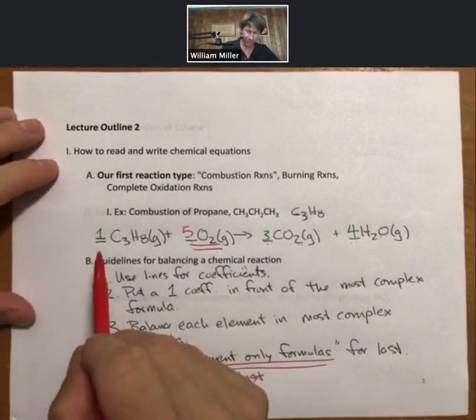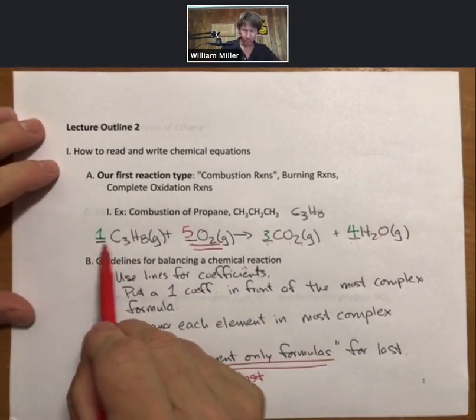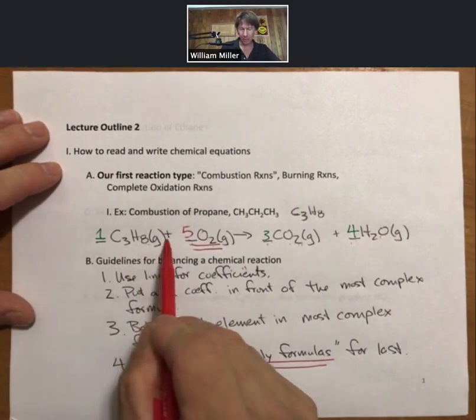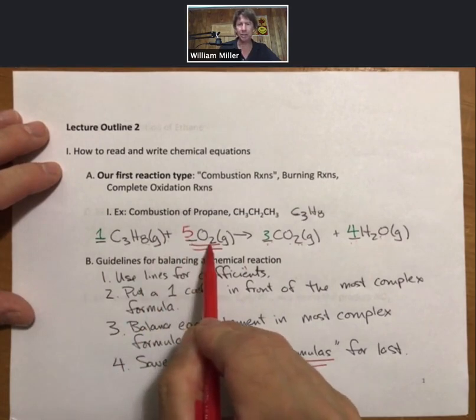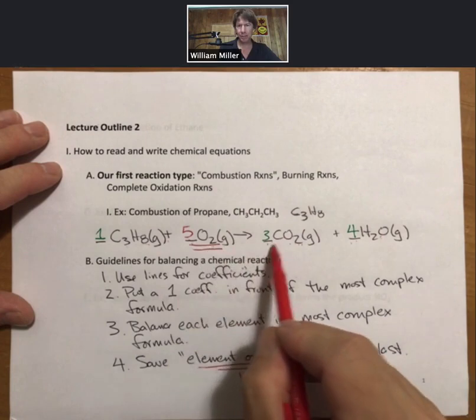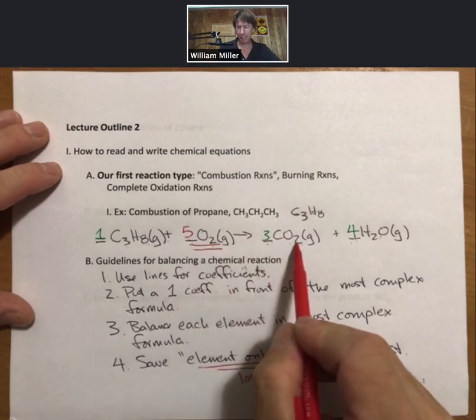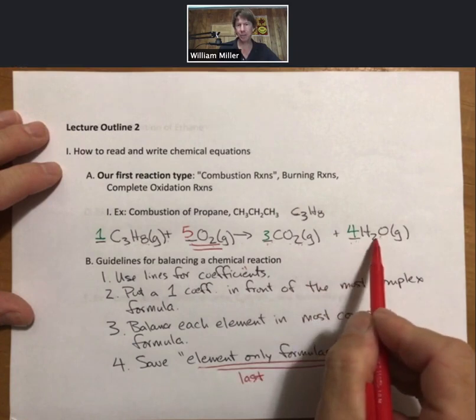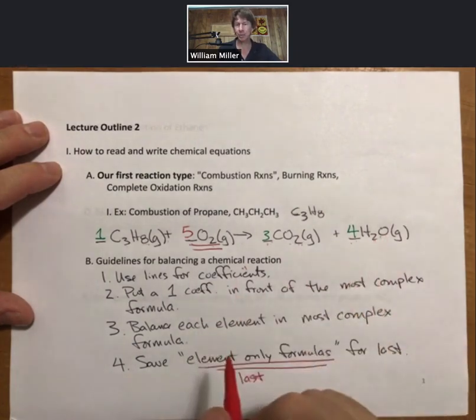one molecule of propane reacts with five molecules of oxygen to produce three molecules of carbon dioxide plus four molecules of H2O. And that's called the molecular or atomic scale interpretation.